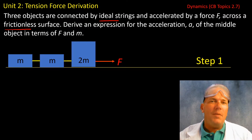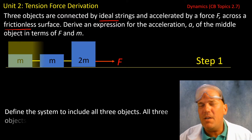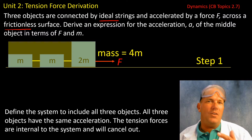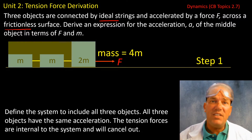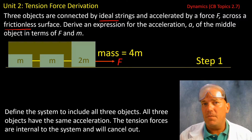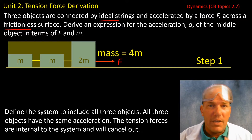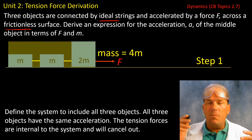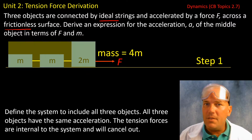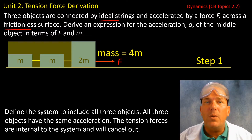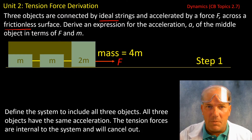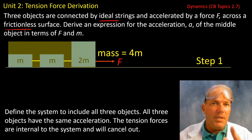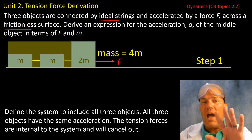Step one is where we translate the problem and come up with a plan for the derivation. Let's call these three objects and the strings a system — one system comprised of the three objects and the strings. All three will share an acceleration. That's what's so cool about a system approach: if one object has this acceleration, then every other object also has that acceleration. Also, the tension forces internal to the system are going to be equal in magnitude, opposite in direction, and therefore will cancel out.